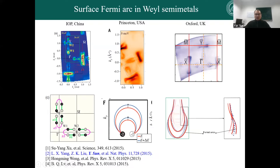For IOP, the understanding of the Fermi arc connected to the Weyl point goes from W1 to W2, and the other from W2 to W2. From Oxford, they only confirmed one of these as the Fermi arc, and the second one was not really confirmed. So three different groups had almost the same data but different understanding of the results.